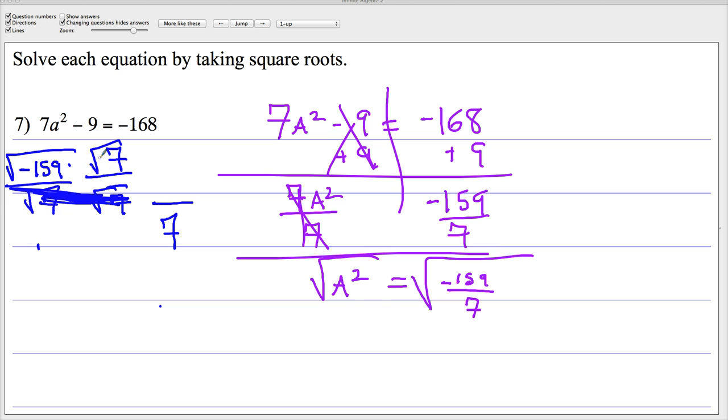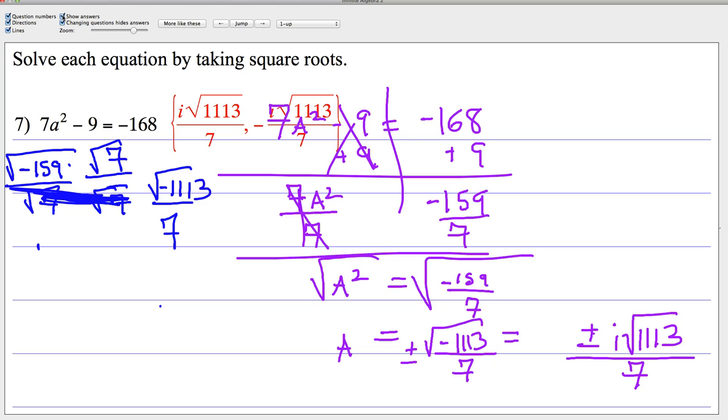On top you have to multiply negative 159 and 7, and you end up getting the square root of 1113 over 7. And this is plus or minus. Not allowed to leave a negative under square root, so we're going to show the imaginary answer. Plus or minus i times the square root of 1113 over 7. Just to make sure you know I'm not making these up, there it is. i times the square root of 1113 over 7, and negative i times the square root of 1113, all over 7.